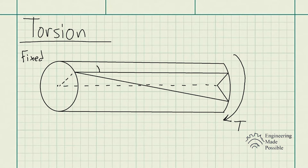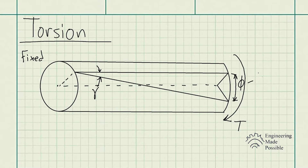This deformation is known as the shear strain, and this angle — from here to here — would be phi, or the angle of twist. In this case the rod is going to be experiencing shear stress, and you can actually look at the shear distribution.